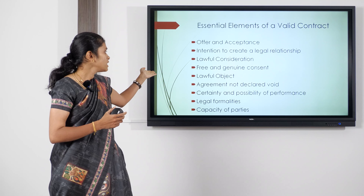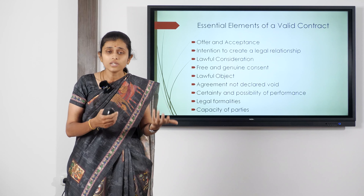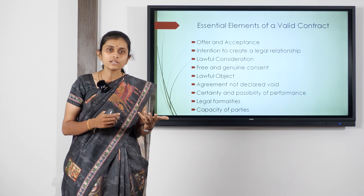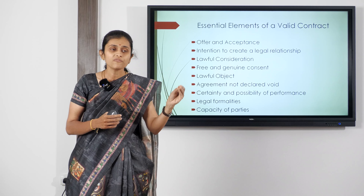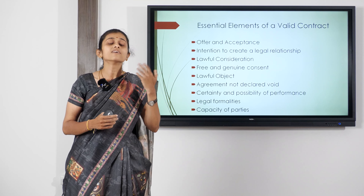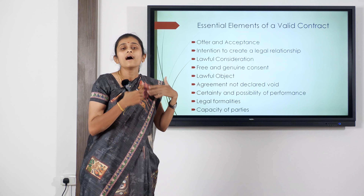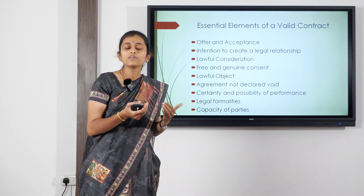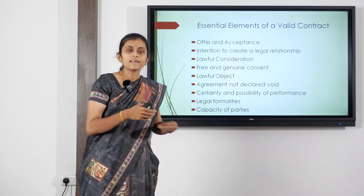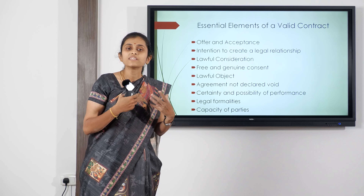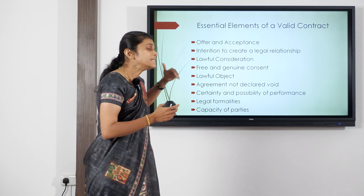The next essential element is lawful object. The objective or purpose for which the contract was initiated should be lawful — it shouldn't be illegal or against public policy. Only when the purpose is lawful is it a valid contract; otherwise it is a void agreement. Any agreement entered into for the purpose of carrying out illegal activities or activities against public policy is void.